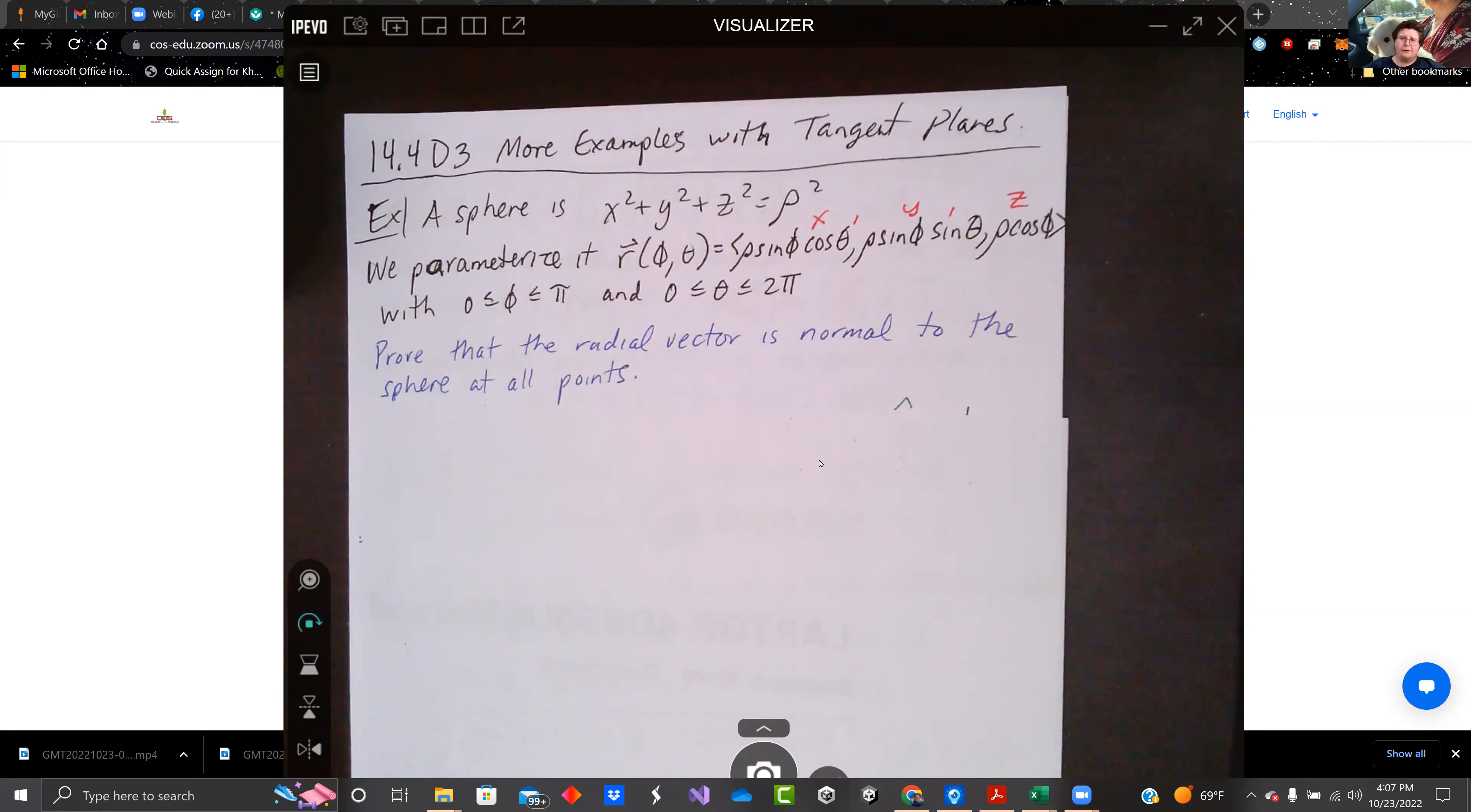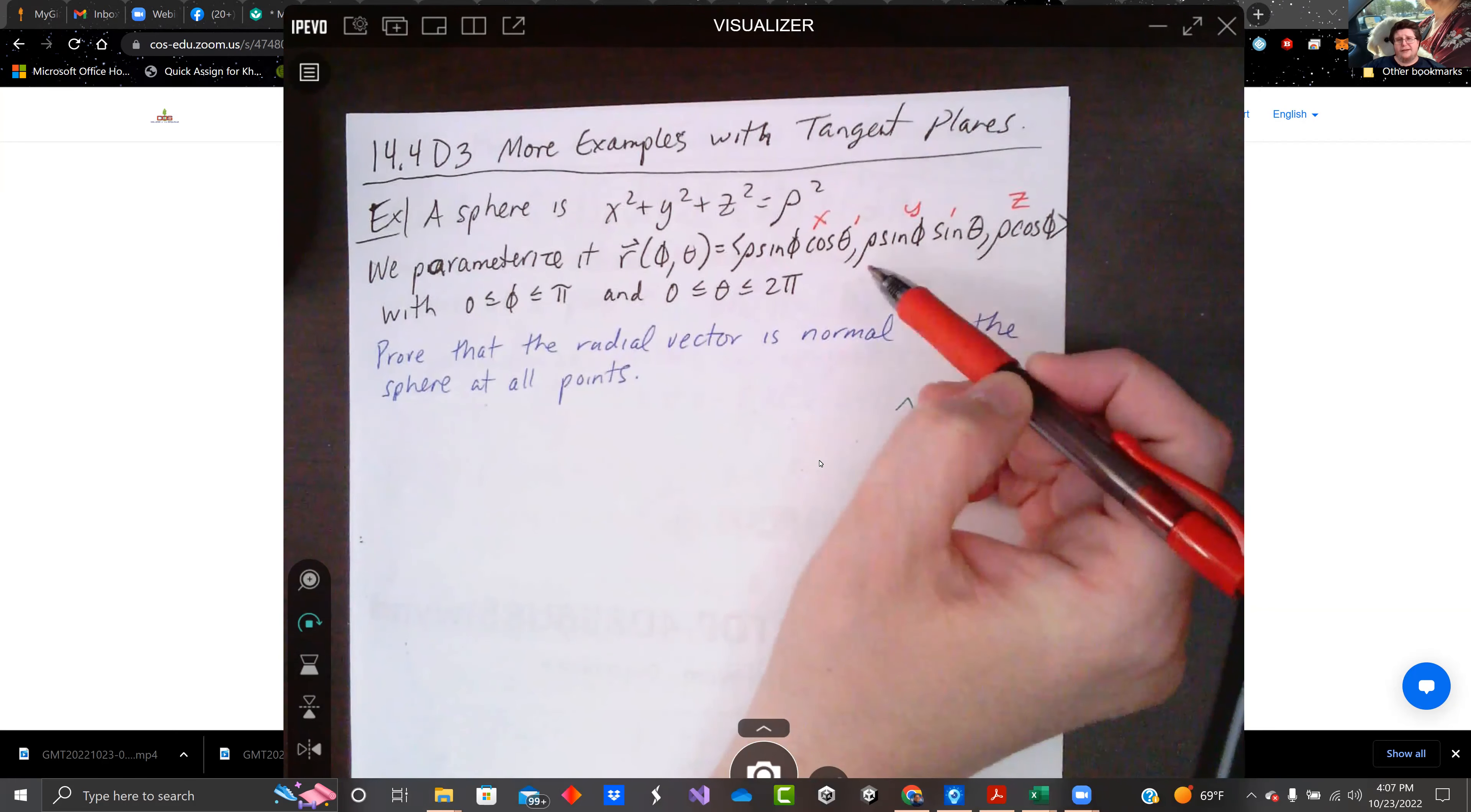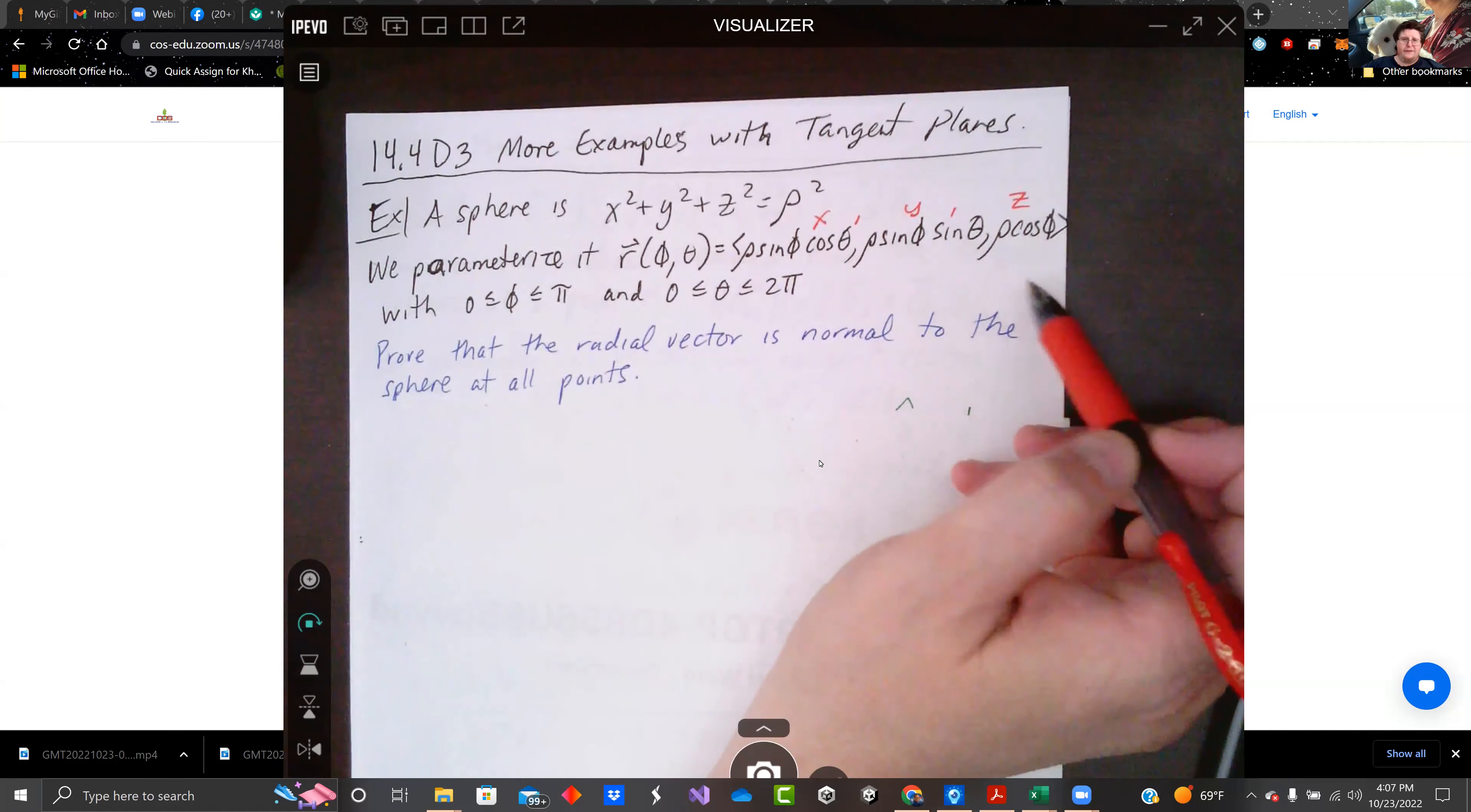We're going to parameterize any point on that sphere as the vector. We're doing the spherical coordinates. So x equals rho sine phi cosine theta, y equals rho sine phi sine theta, and z equals rho cosine phi.